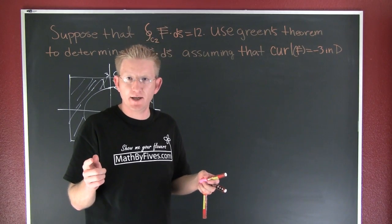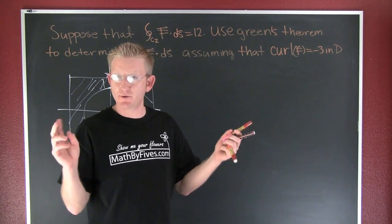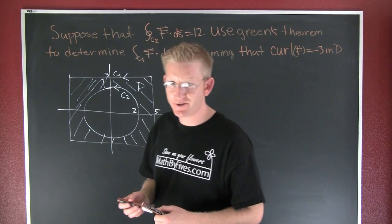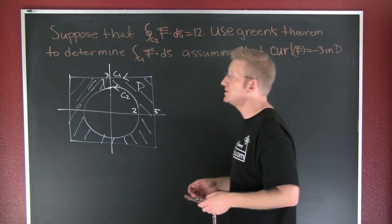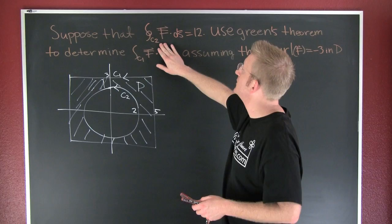We have a popular application of Green's General Theorem, or a more general version of Green's Theorem. What we want to do is suppose that the line integral, the closed integral, the circulation around path C2, is equal to 12.